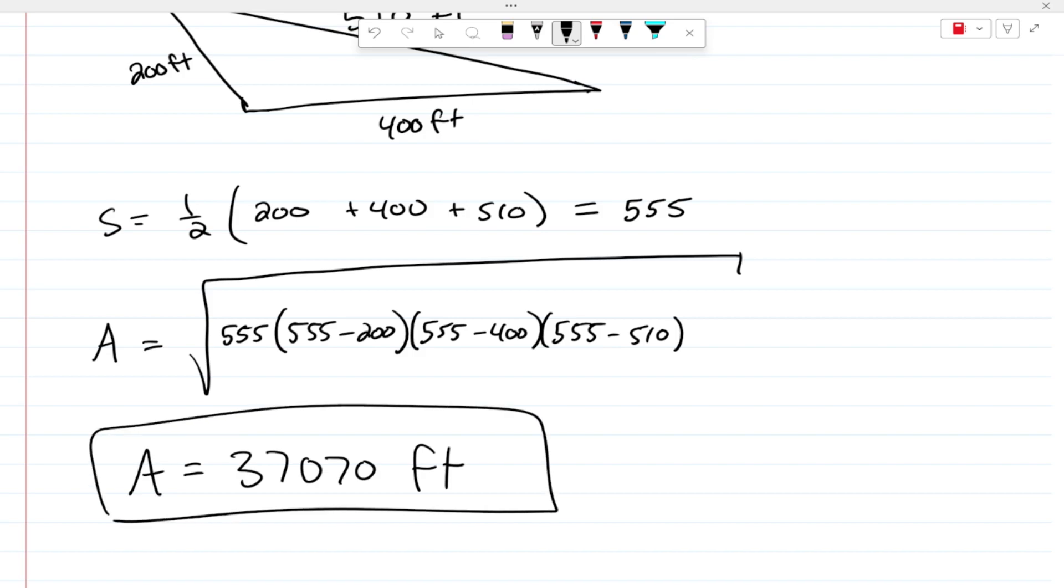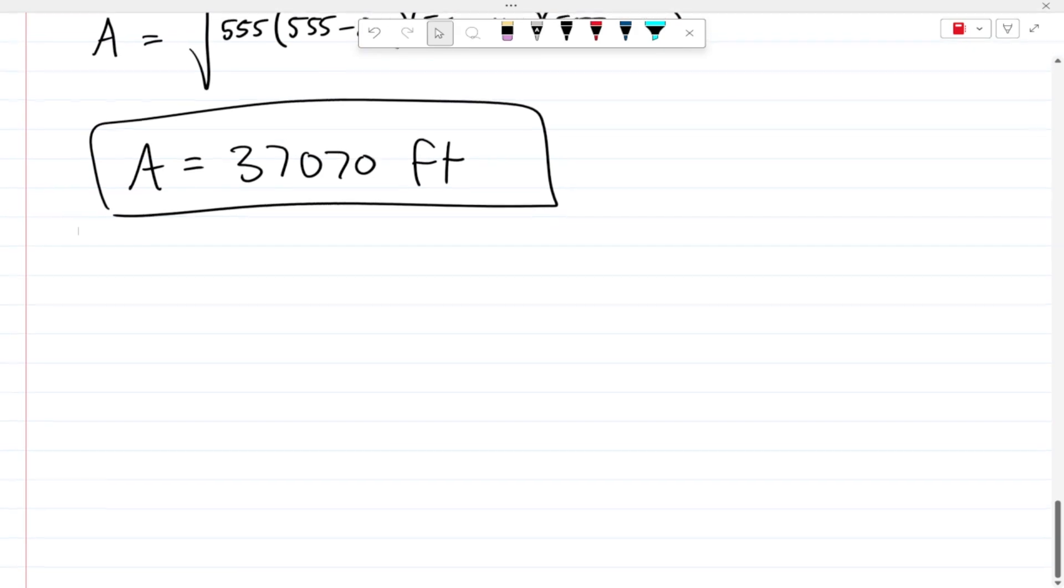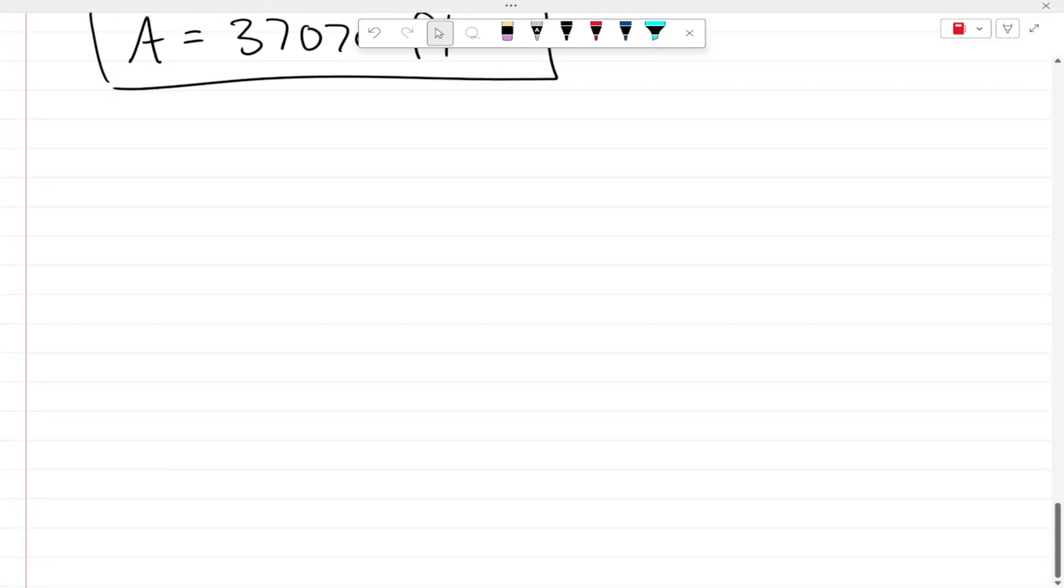So using Hero's formula is very straightforward. All you have to do is just remember that you use this when you do not have a right triangle and you know the three sides. More about this right triangle that I was just talking about.